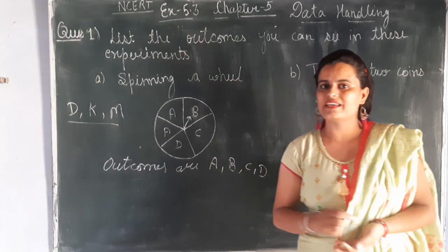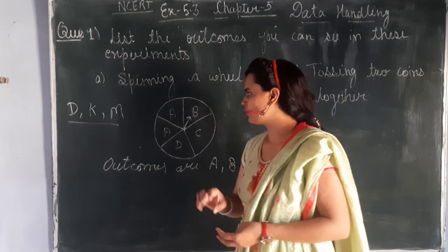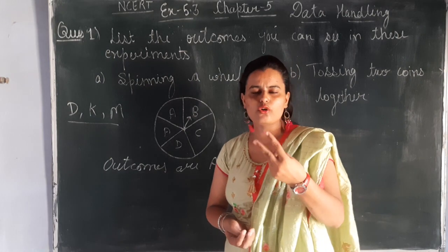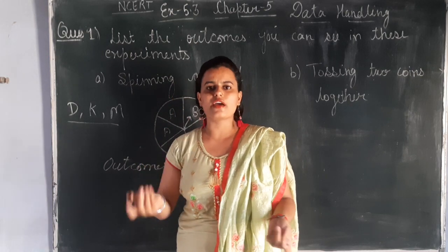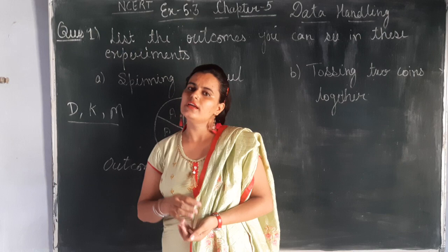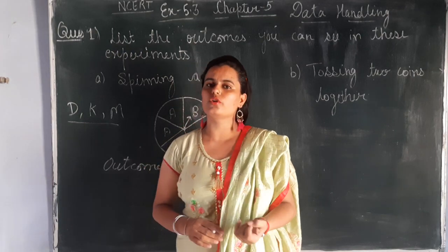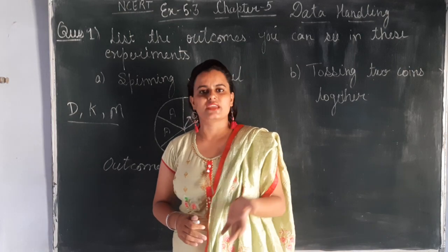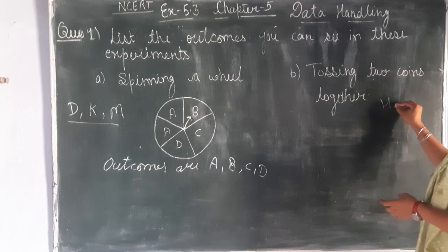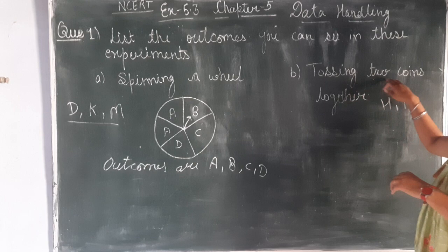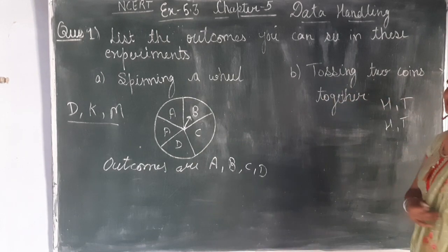The second part is tossing two coins together. Whether you have a coin toss or a cricket match, there are only two options for each coin: head or tail. When you toss two coins together, we will talk about all possible outcomes.